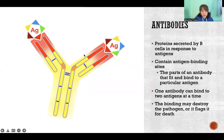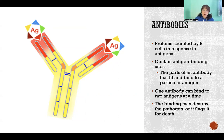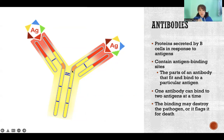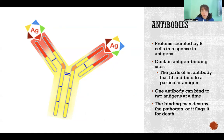Antibodies are Y-shaped proteins that have two binding sites at the top of the two Y arms. They are designed to only bind to that particular antigen that they are meant to target. So if an antibody encounters the specific antigen it targets, it will bind to that antigen. In some cases, the antibody binding is enough to actually kill the pathogen, because it might be enough to interfere with their metabolic processes.